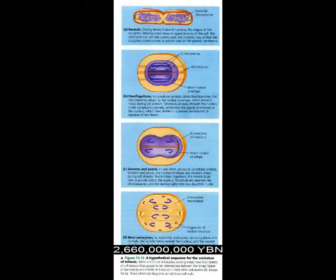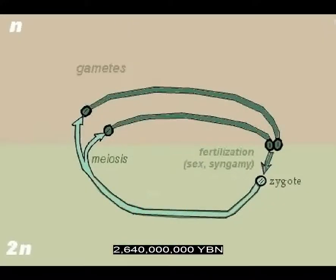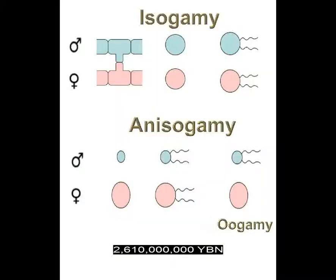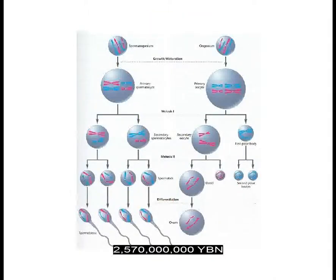Mitosis evolves in eukaryote cells. Eukaryote sex evolves. First diploid cell — two sets of chromosomes. First zygote. Increase in genetic variety. Meiosis — division of diploid into haploid cells. Eukaryote gender: anisogamy — cell and nucleus fusion between two cells that are different in size or shape. Two-step meiosis: diploid DNA copies, and then the cell divides twice into four haploid cells.